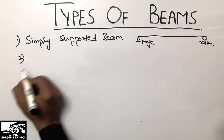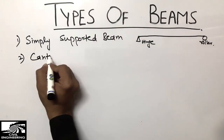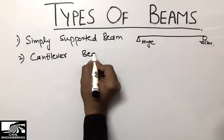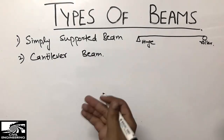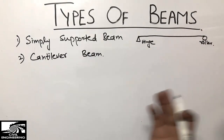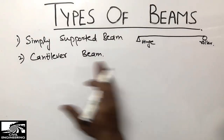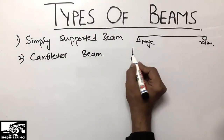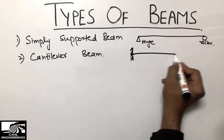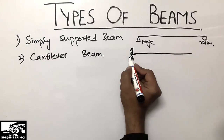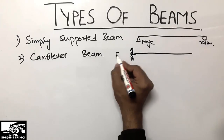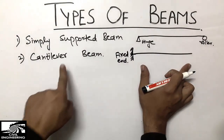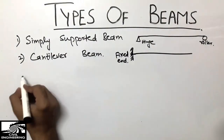The second one is the cantilever beam. It's a very important beam to know about and it is mostly used in residential buildings and every construction. It is the beam which is supported only at one end, and that one end should be a fixed end support. So we call this type of beam the cantilever beam.